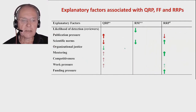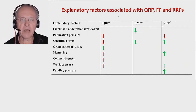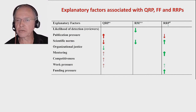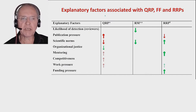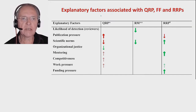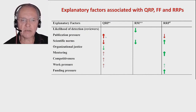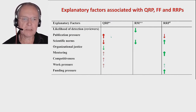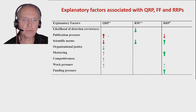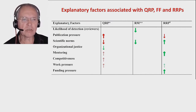Back to our survey. We looked at potential drivers of behavior of researchers: questionable research practices, FFP, research misconduct, and also the responsible research practices. Please remember, this was cross-sectional, so I cannot interpret in a causal way — it's only suggestive at most. But what we saw is rather interesting. The arrows indicate: red is in the wrong direction and green is in the right direction, and the thickness of the arrow indicates the effect size. I have to refer you to the preprints for what all these arrows exactly mean and how we measured these explanatory factors.